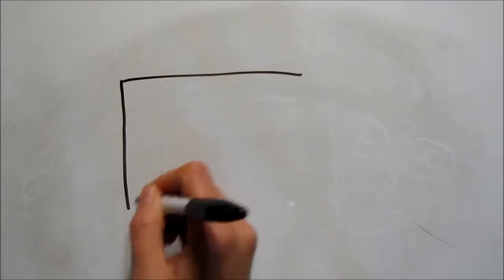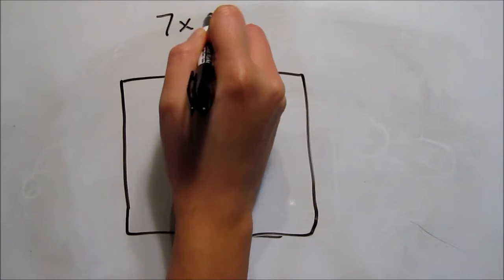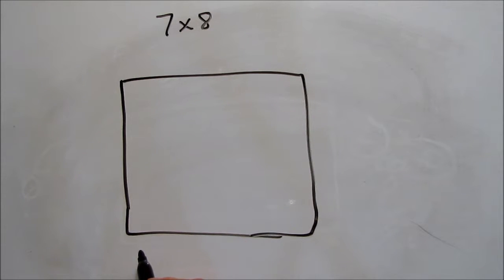Next, we'll start using open arrays. These are very helpful when we want to start breaking multiplication problems apart. We'll do this for problems like 7 times 8, where counting by either number is tricky.